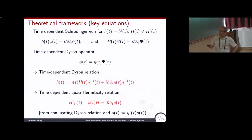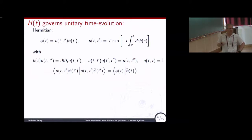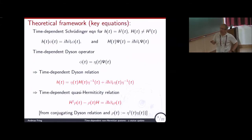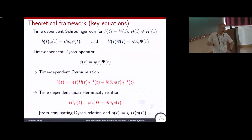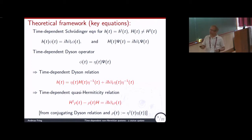Quasi-Hermiticity means, in the old literature, this equation — that's the definition of quasi-Hermiticity. In the time-independent case, it's just a similarity transformation and eigenvalues are preserved. That's the key idea: because h is Hermitian it has real eigenvalues, and therefore H also has real eigenvalues as long as this transformation is defined. That's the time-independent case, which is well known. The complication in the time-dependent case is this additional term.